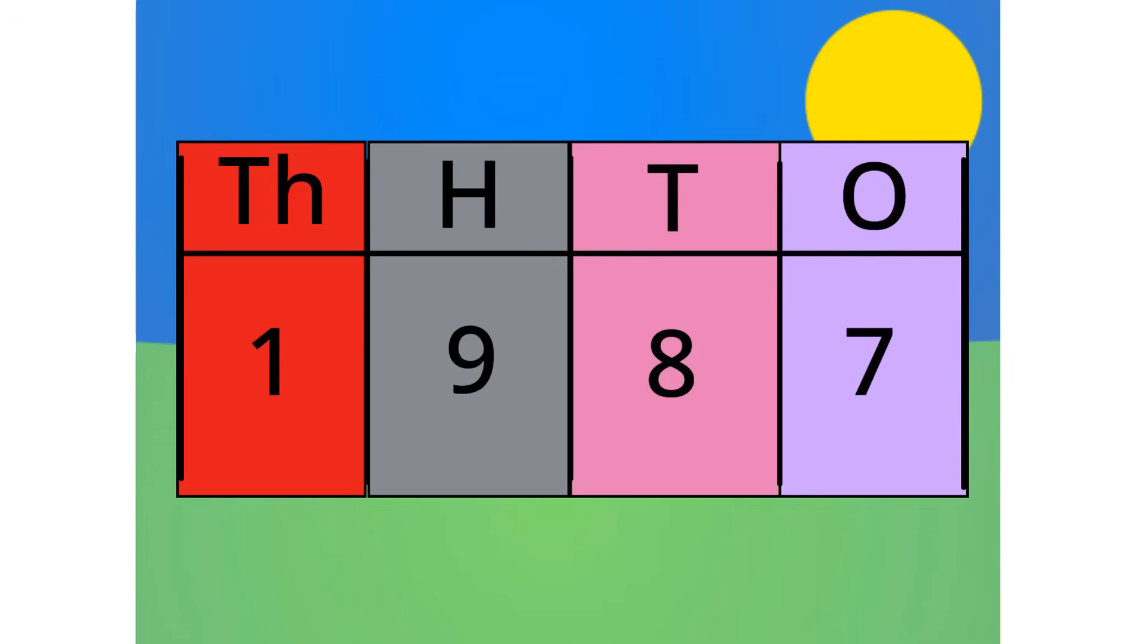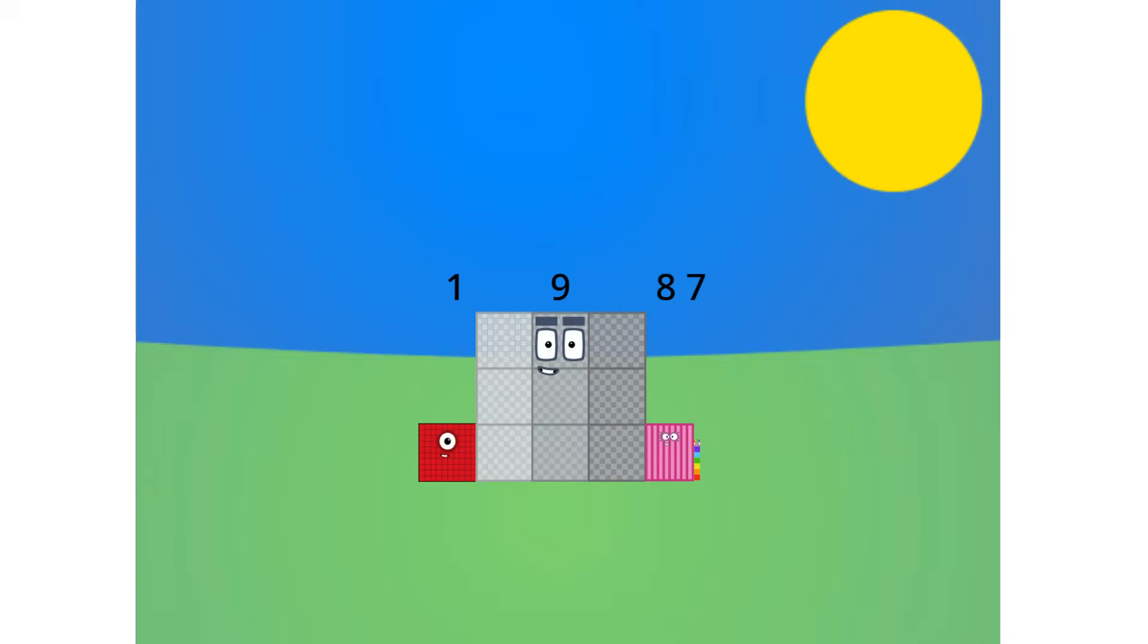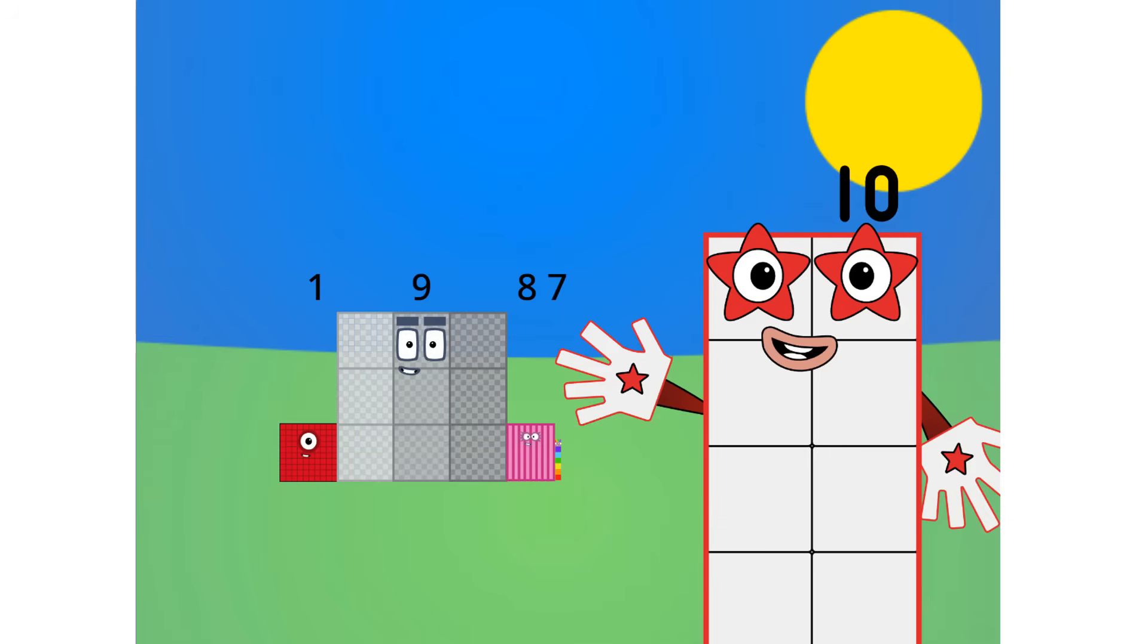Let's see this in block form, shall we? As you can see, this number is one thousand, nine hundreds, eight tens, and seven ones.